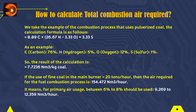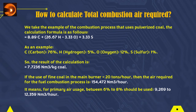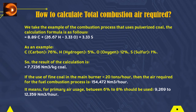If the use of fine coal in the main burner equals 20 tons per hour, then the air required for the fuel combustion process is 154,472 normal meter cubic per hour. It means that for primary air usage, between 6% to 8% should be used, which equals 9,269 to 12,359 normal meter cubic per hour.